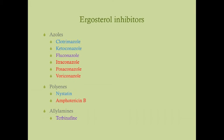The ones in blue are topical, the ones in red are systemic (oral or IV), and the ones in purple can be either. We have clotrimazole, ketoconazole, fluconazole, itraconazole, posaconazole, and voriconazole. For polyenes we have nystatin — which is a swish and swallow but is not absorbed so it's really topical — and amphotericin B. Out of the allylamines we have terbinafine.